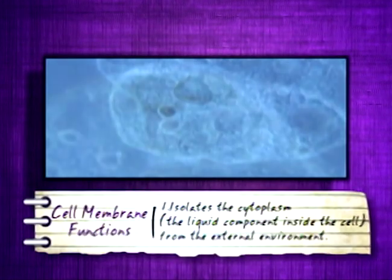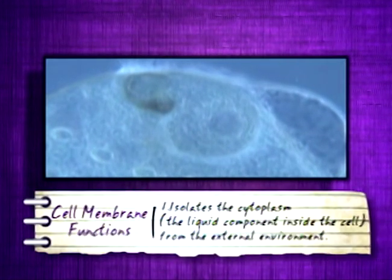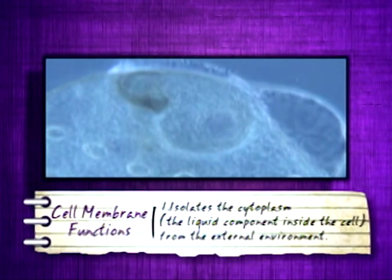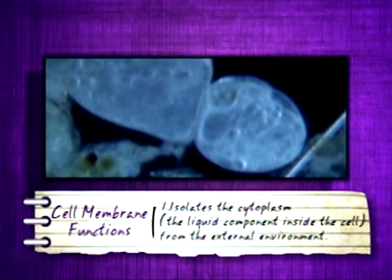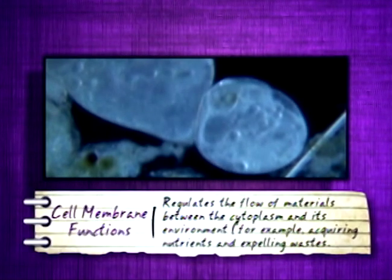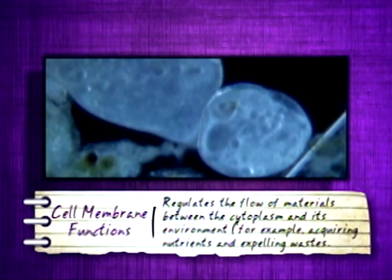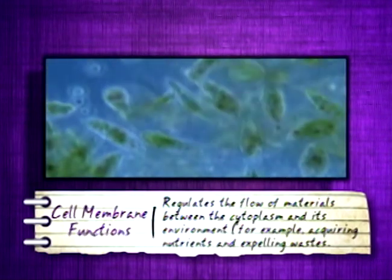One, it isolates the cytoplasm — the liquid component inside the cell — from the external environment. Two, it regulates the flow of materials between the cytoplasm and its environment, for example, acquiring nutrients and expelling waste.